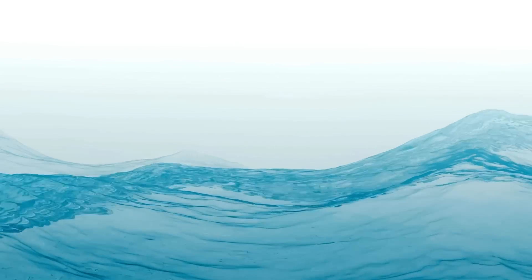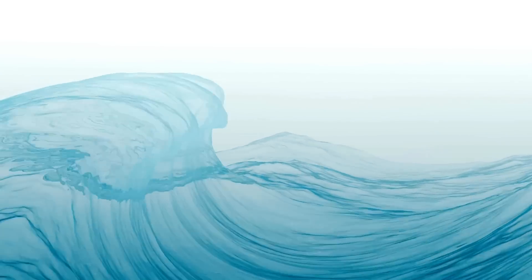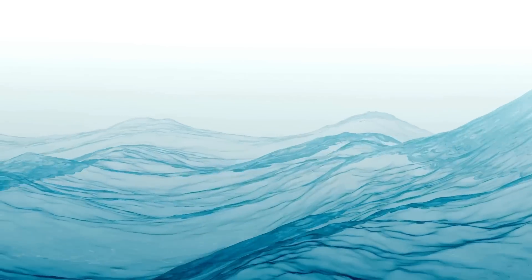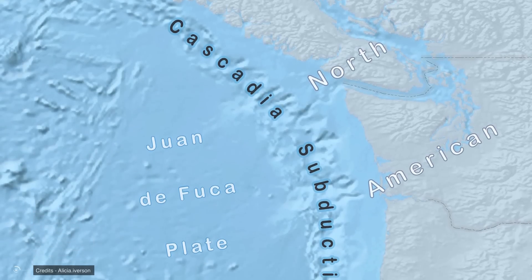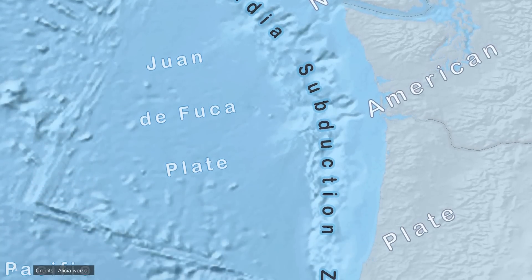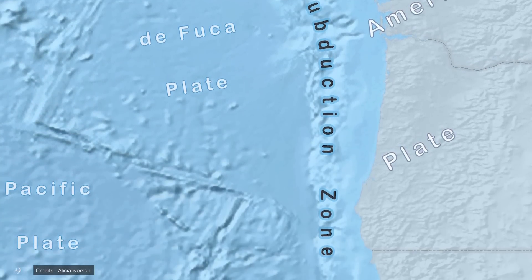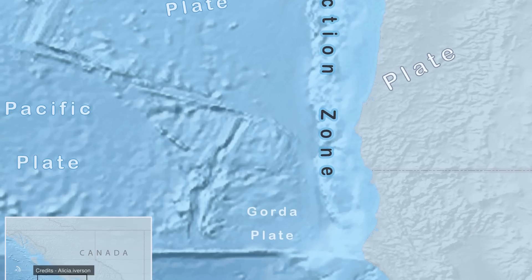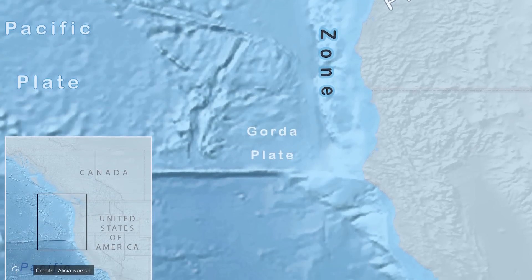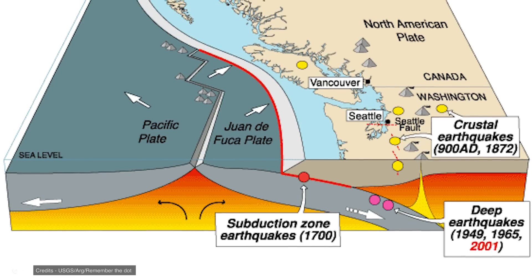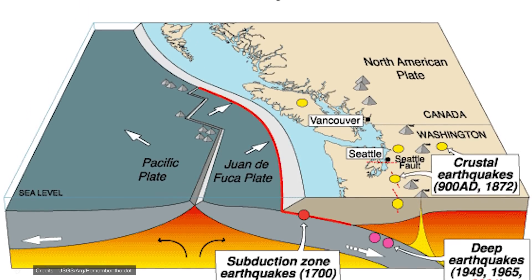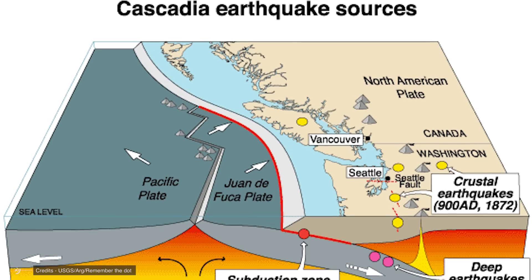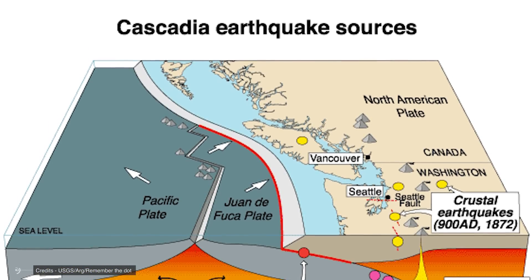Of the numerous fault lines crisscrossing the US, the Cascadia subduction zone is among the most underrated and potentially devastating. The Cascadia subduction zone is a convergent tectonic plate boundary located off the west coast of North America, stretching from Northern California to British Columbia. This geologically active region is the result of the Juan de Fuca and explorer plates subducting beneath the North American plate.